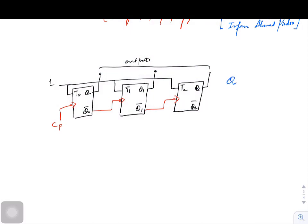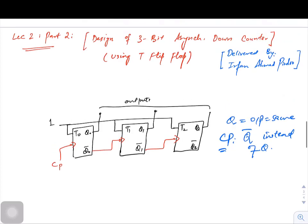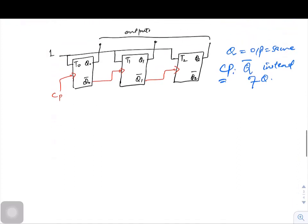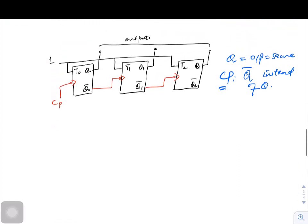across the same terminals as for up counter. The Q output remains same, whereas the clock pulse is given from Q bar instead of Q. Now I will repeat the same process, but right now we are doing it for a three-bit asynchronous counter. So let